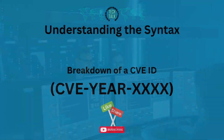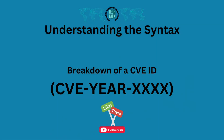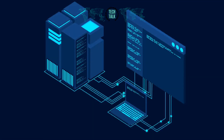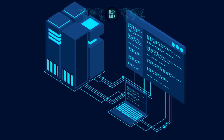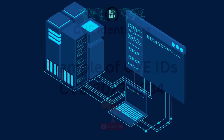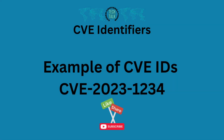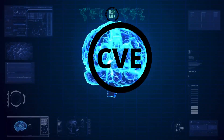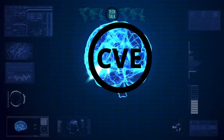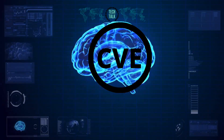The CVE ID format includes the year of assignment and a unique number, ensuring a scalable and organized system. Each vulnerability is assigned a unique CVE identifier, making it easier to discuss and address these security issues.